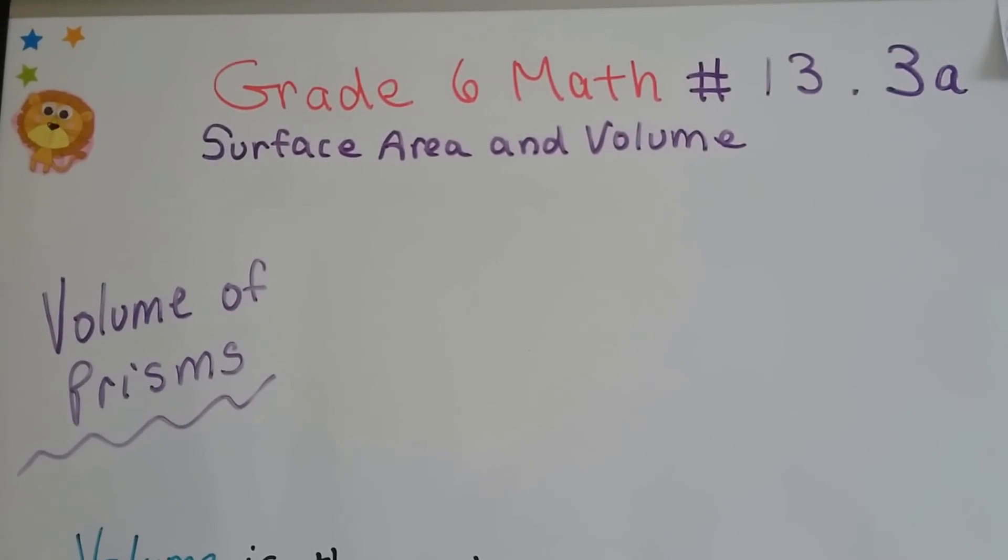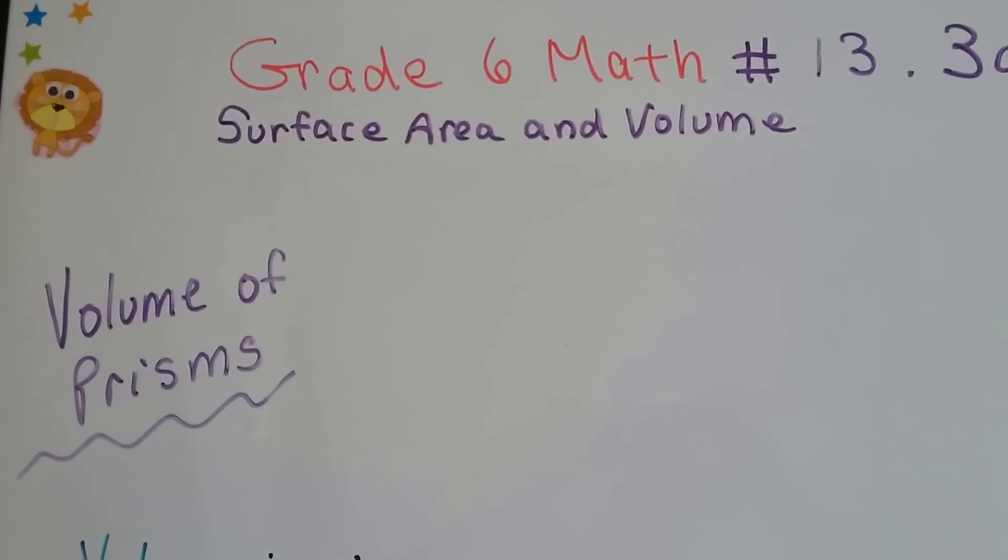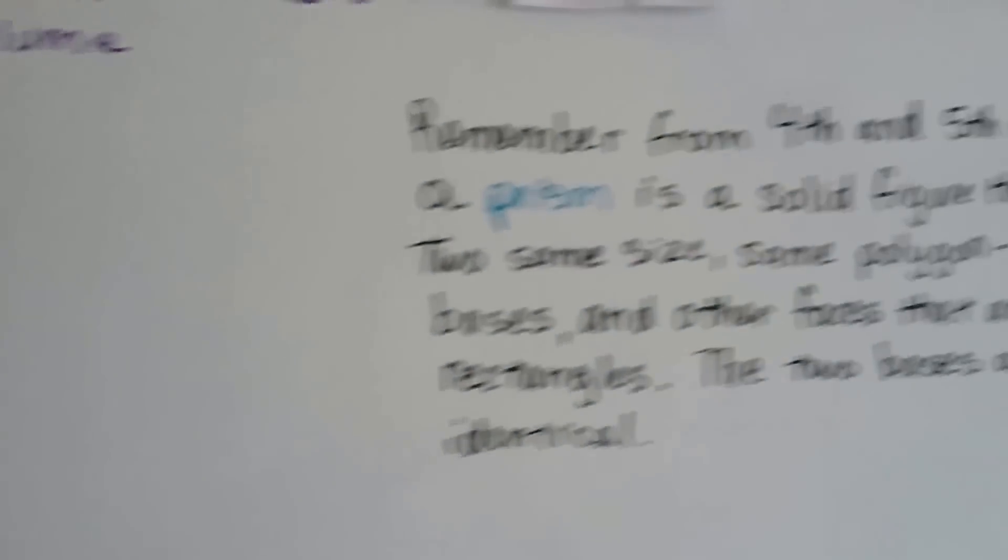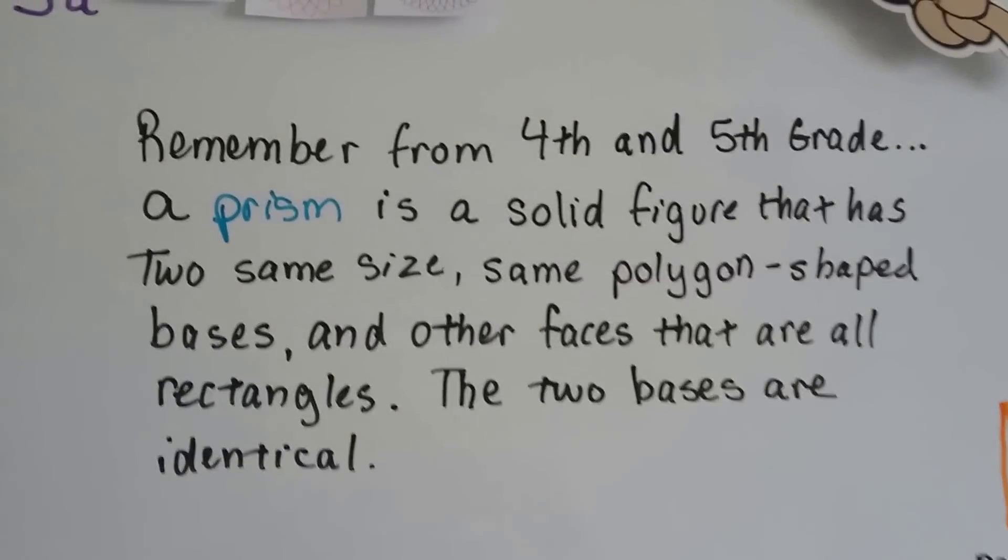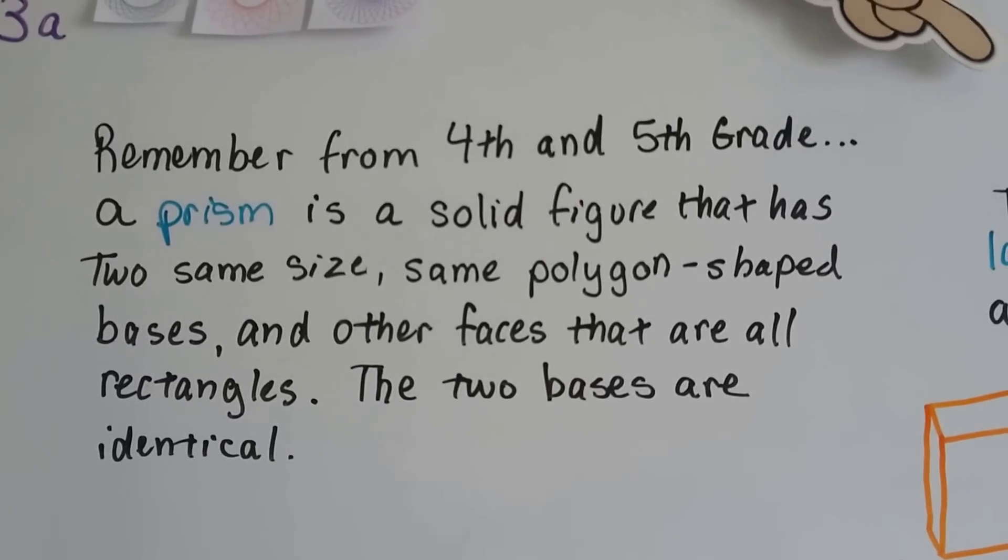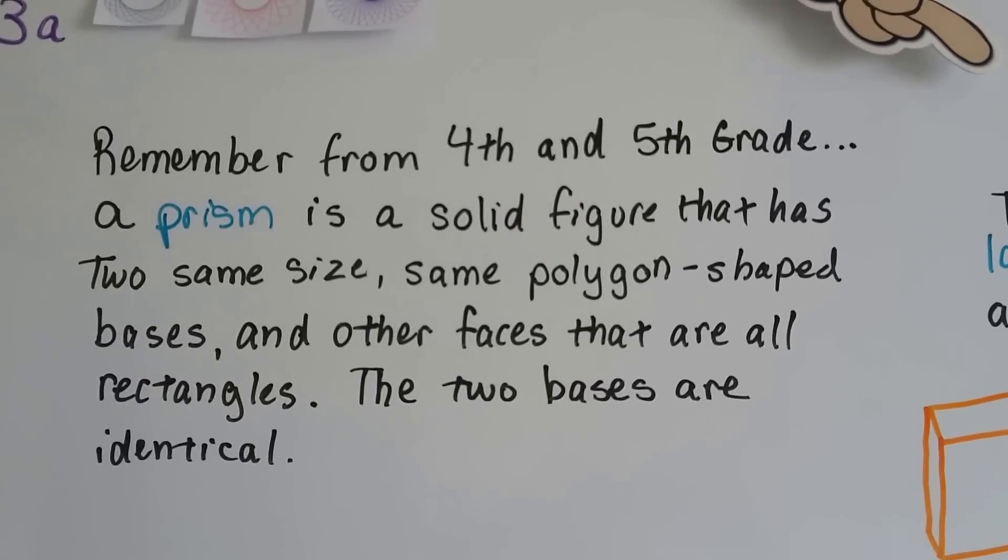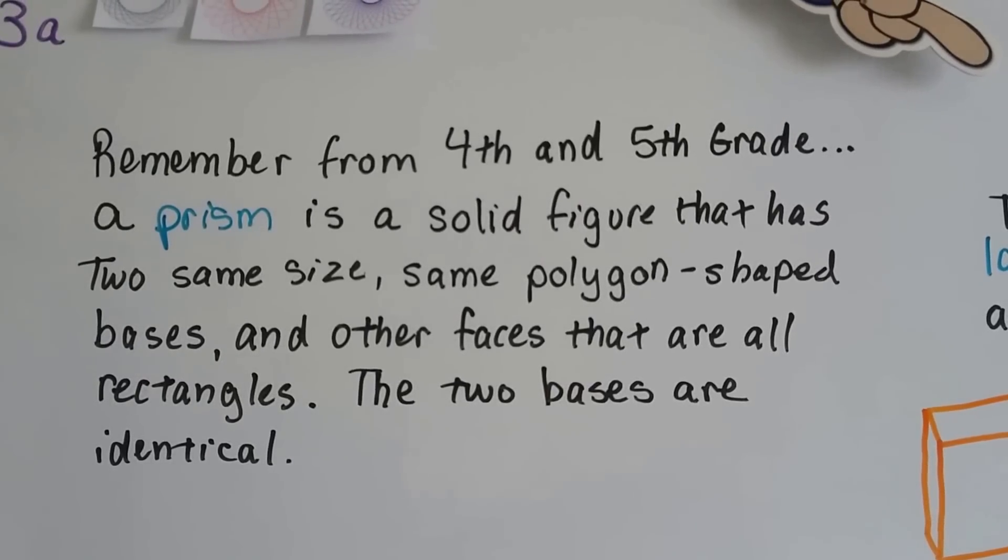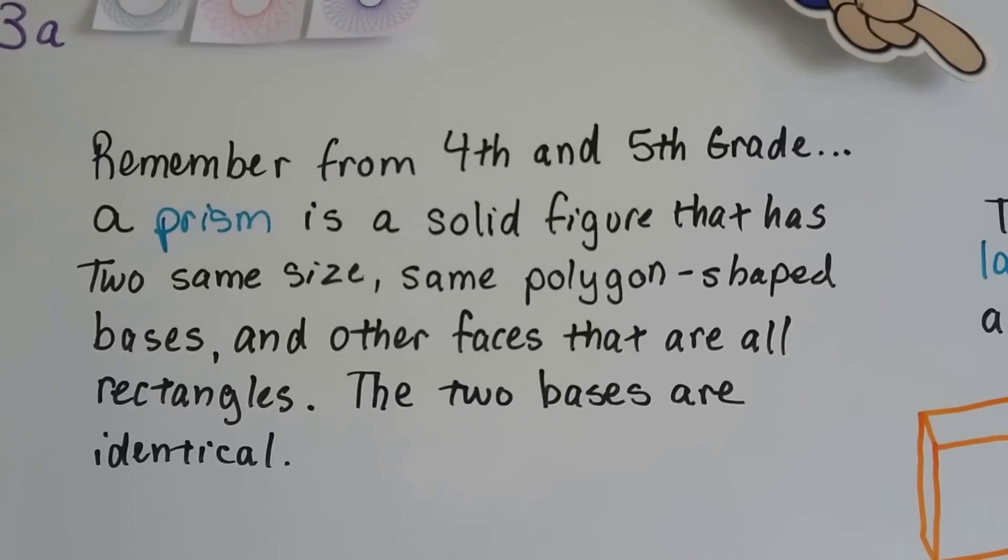Grade 6 math number 13.3a: volume of prisms. Remember from fourth and fifth grade, a prism is a solid figure that has two same-size, same-polygon-shaped bases and other faces that are all rectangles or squares.